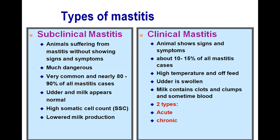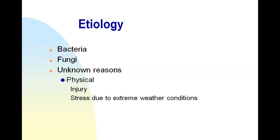Somatic cell count is one indirect test for mastitis — you count somatic cells in the milk and if the count is high, the milk is positive for mastitis. The second type is clinical mastitis — the animal shows clinical signs and symptoms including high fever, being off feed, a very swollen and hot udder showing pain, and the animal will not allow the owner to touch the udder. The milk contains clots, clumps, and sometimes blood. Clinical mastitis is further divided into acute and chronic types.